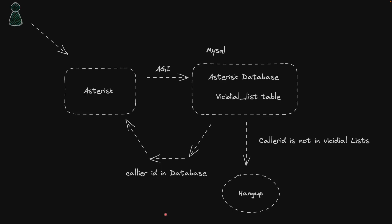AGI script is a very good solution for this requirement. When a customer calls our Asterisk system, Asterisk gives control to an AGI script. The AGI will query our Asterisk database — specifically the table where we save the list of customers and their phone numbers, which in VICIdial we call 'vicidial_list'. If the caller ID is not found, it will hang up the call. If it is found, it sends control back to Asterisk, which then continues via its dial plan to the next step.